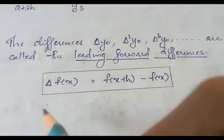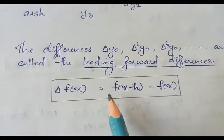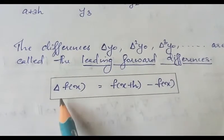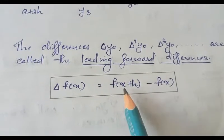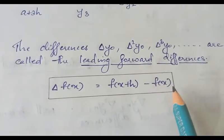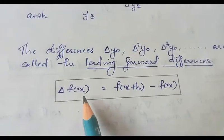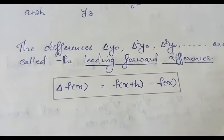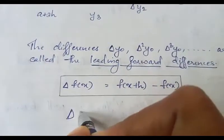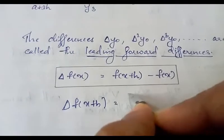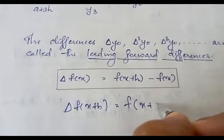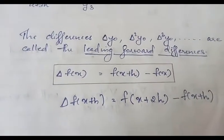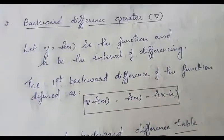Therefore, the forward difference operator delta f of x can be defined as f of x plus h minus f of x. So we can find the forward difference delta f of x by computing f of x plus h minus f of x — that is, the next function value minus the current function value. Similarly, delta f of x plus h can be written as f of x plus 2h minus f of x plus h.